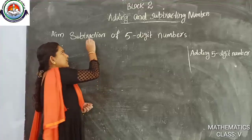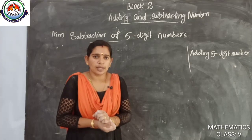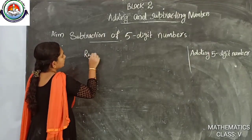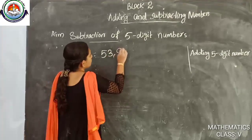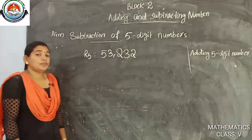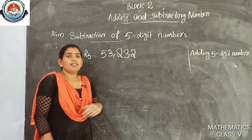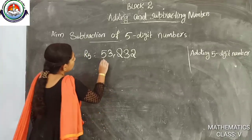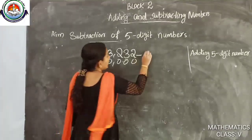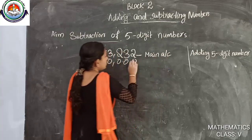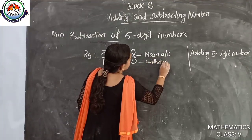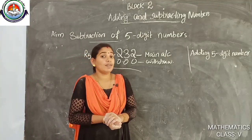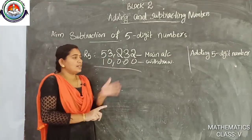Consider this: one day I visited a bank where I have an account. I have rupees 53,232 in that account. I want to withdraw 10,000 rupees. After the withdrawal, how much money remains? We will subtract it. Using the abacus, we will subtract this.